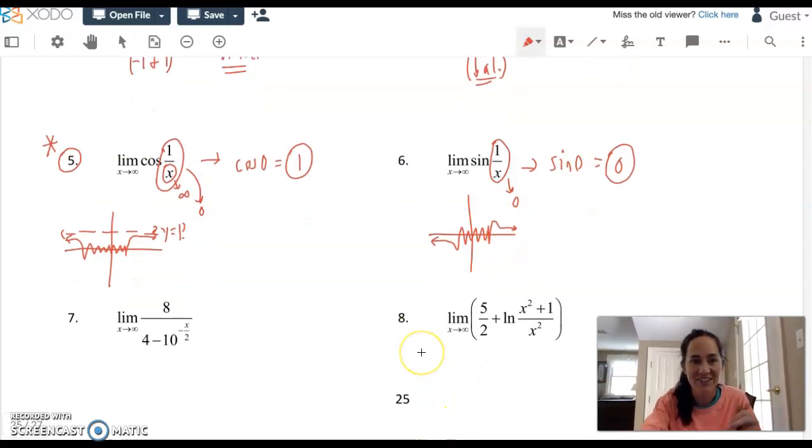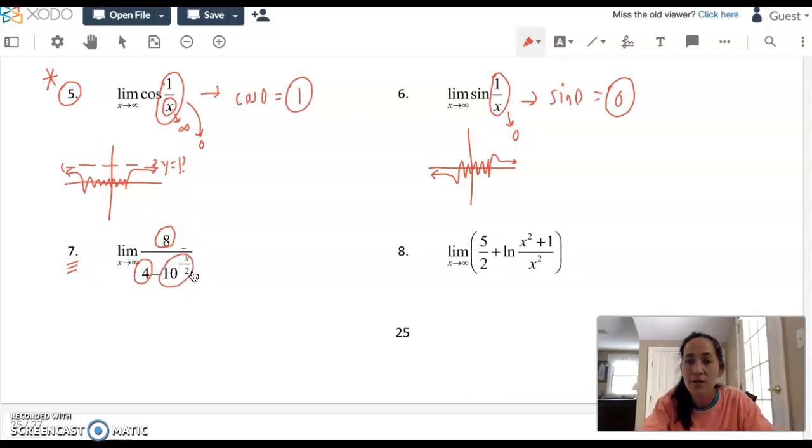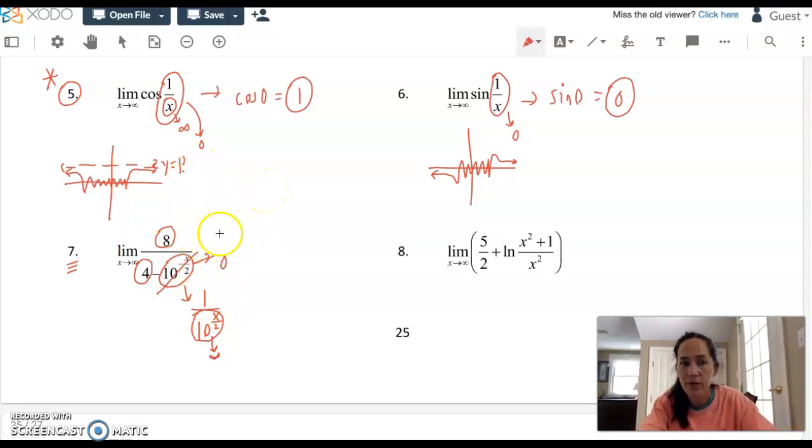7 has an exponential term on the bottom. We've got to figure out what dominates here. You've got an 8, you've got a 4, and then you've got this guy minus 10 to the negative x over 2. That is going to flip the 10 and raise it to bigger and bigger powers. As x goes to infinity, this denominator gets larger and larger and larger. The whole entire fraction is going to go to 0. So this thing's out of the running. It's trivial. The 8 and the 4 remain, and your limit's going to be 2.